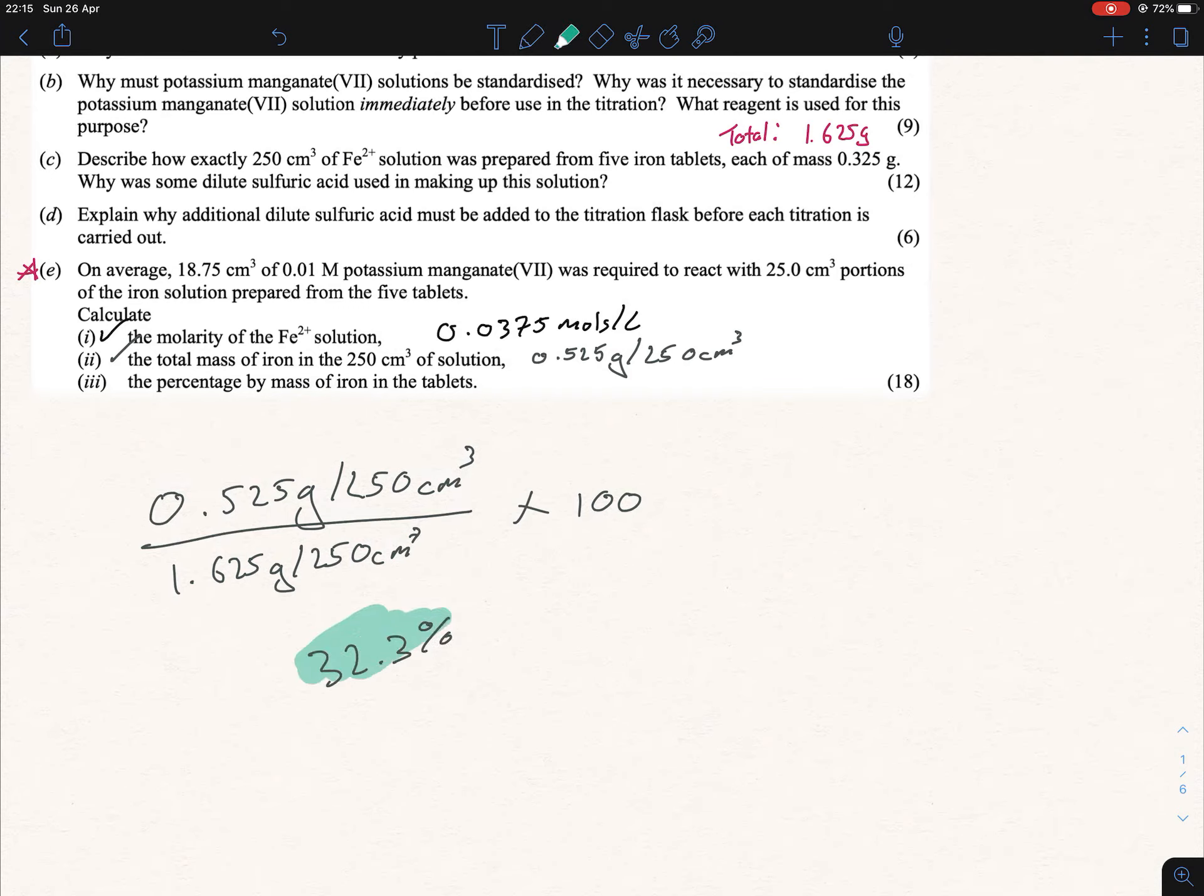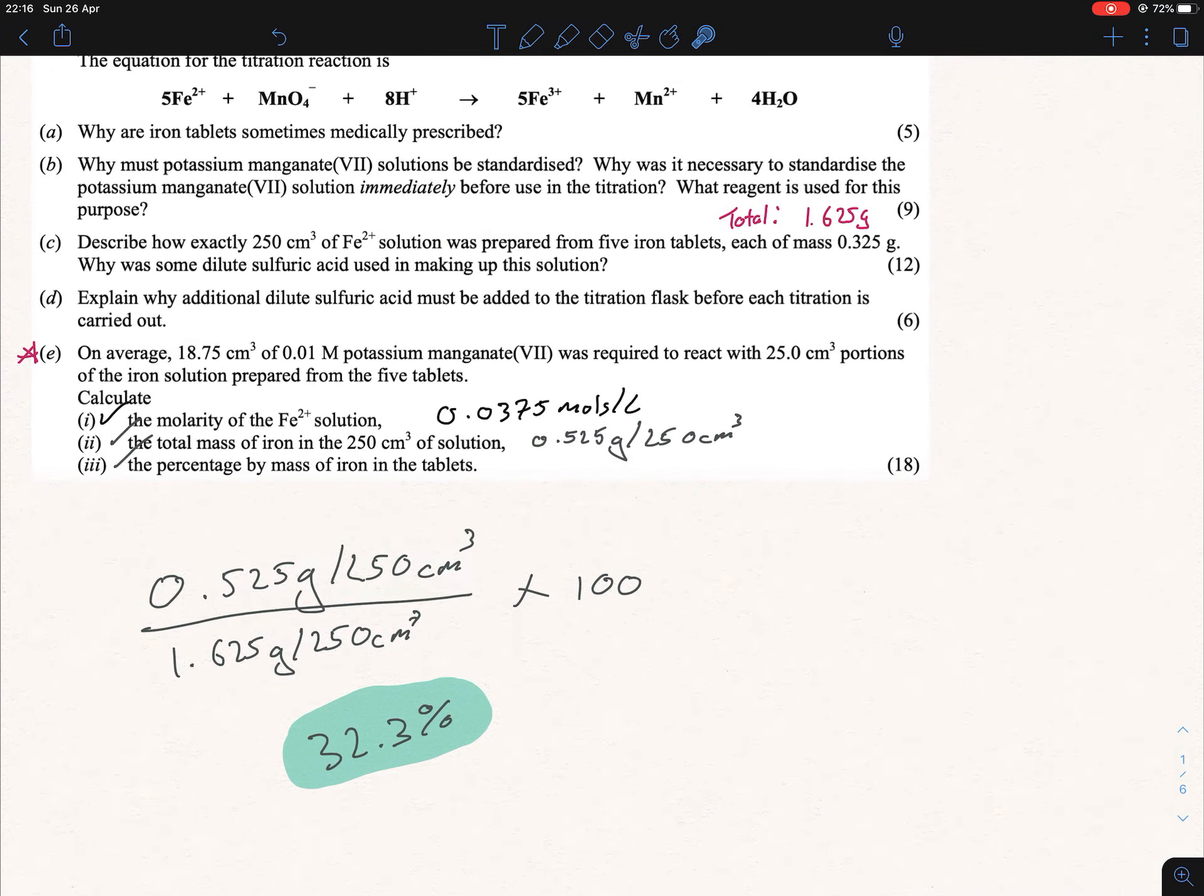That's your answer - that's how much iron there is in total. You could have done it per tablet, it wouldn't have actually mattered, you would have got the same answer because you would be using different masses, but I think this way is just the most straightforward. There wasn't much to it - all I did there was put the mass of the actual iron, which is this one over here, over the total mass of the iron tablets. There was five tablets, so I just multiplied this by five to get 1.625 grams, times 100 because we're looking for percentage by mass.